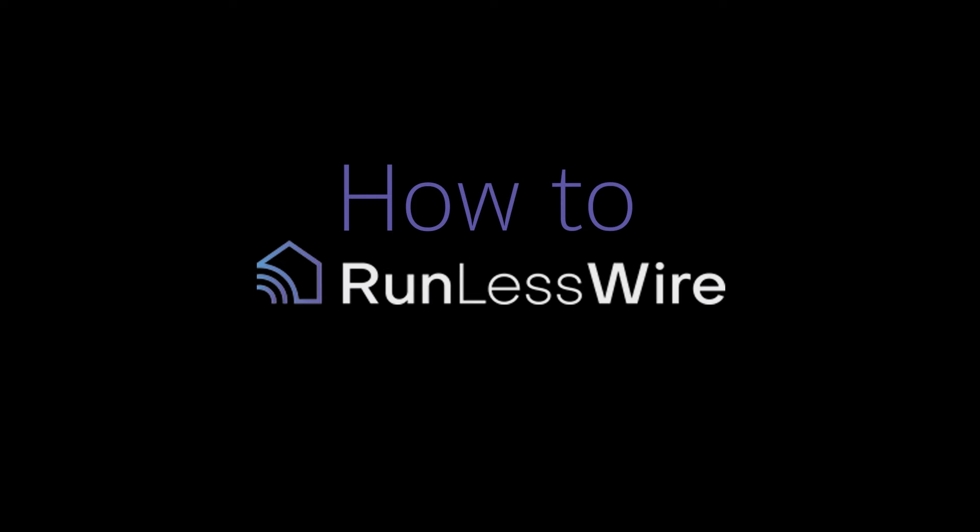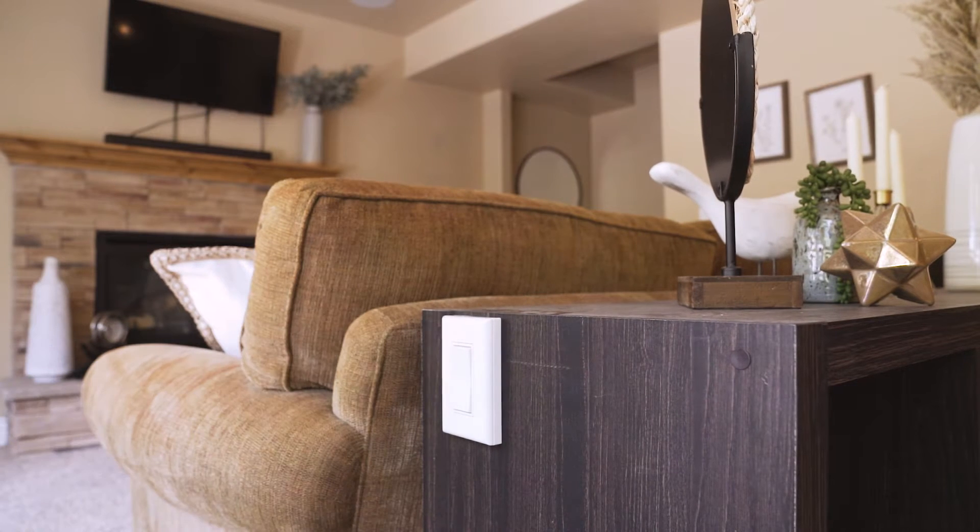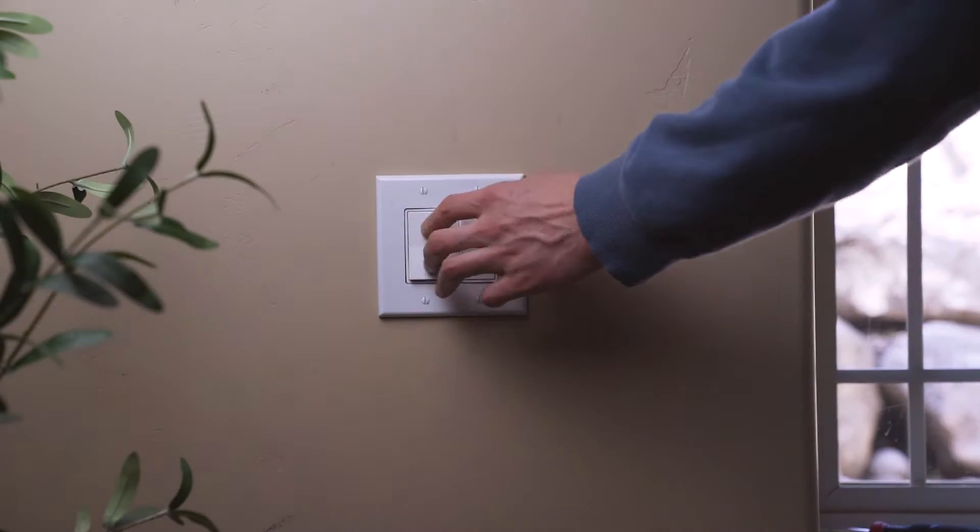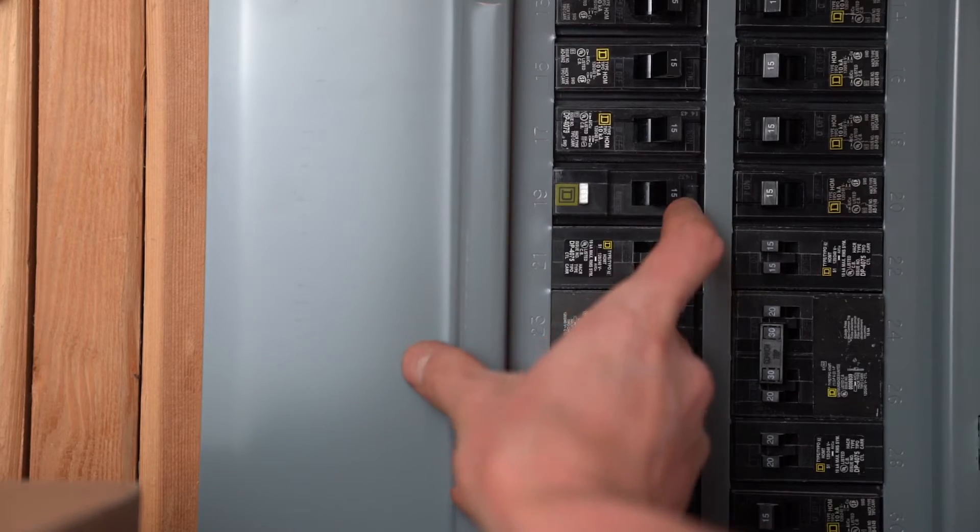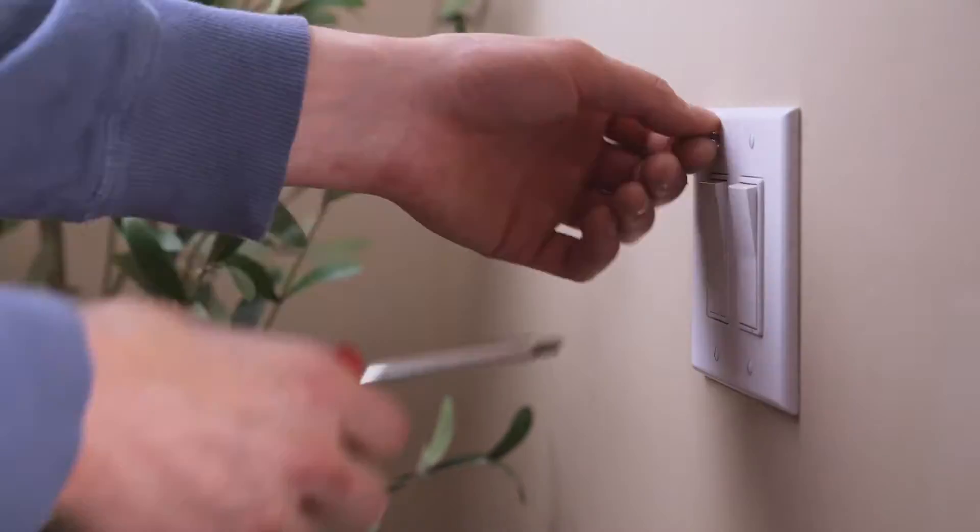How to install the Runless Wire 5A Wireless Relay and Single Rocker Wireless Light Switch. First, locate your light switch and turn off the breaker that goes to it.